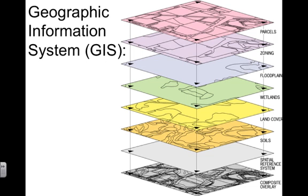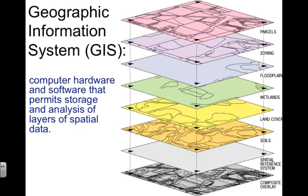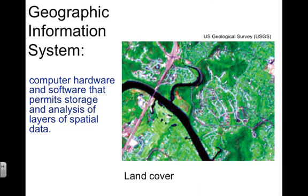Now let's take a look at GIS — geographic information systems. Because of modern computer hardware and software, we're able to store and analyze layers of spatial data. Note the pronunciation: it's 'spatial,' dealing with space and area — not 'spatial.' There's no such thing.